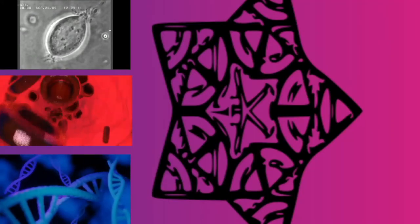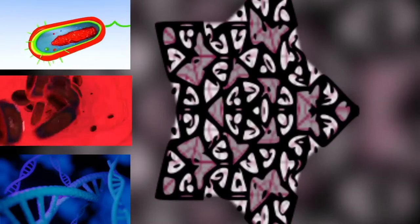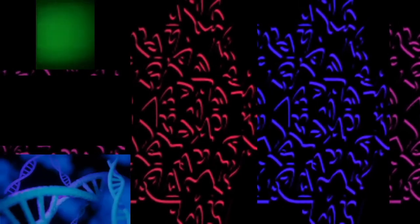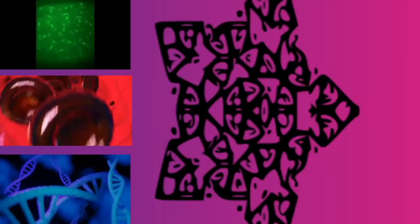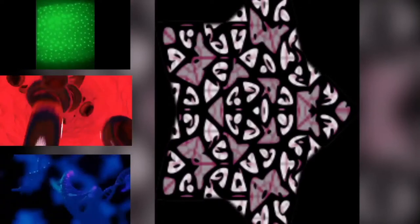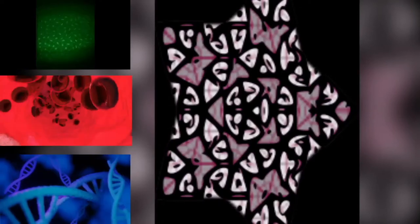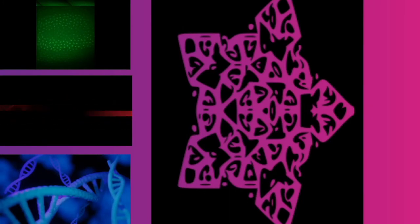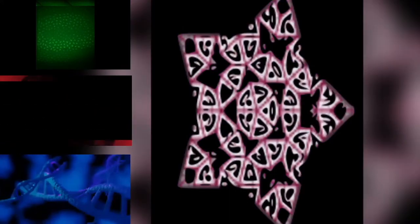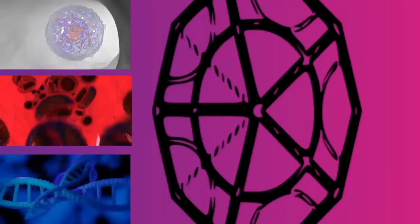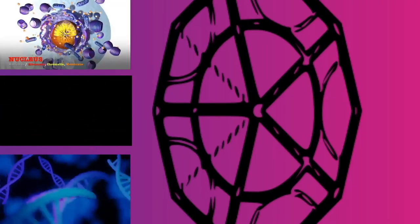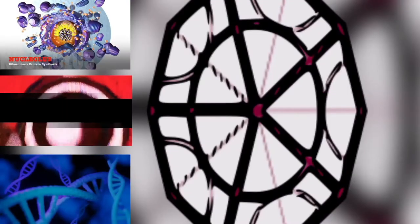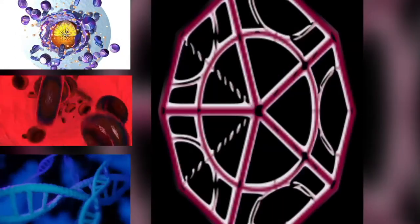The cells of fungi are most similar to animal cells, with the following exceptions: a cell wall that contains chitin, and less compartmentation between cells. The hyphae of higher fungi have porous partitions called septa, which allow the passage of cytoplasm, organelles, and sometimes nuclei, so each organism is essentially a giant multi-nucleate supercell. These fungi are described as coenocytic. Primitive fungi have few or no septa. Only the most primitive fungi, chytrids, have flagella.